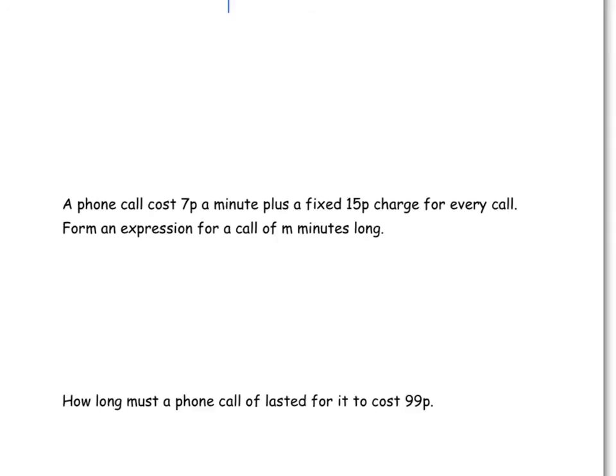So each minute costs 7p. One minute would cost 7p, two minutes 14p, three minutes 21p, four minutes 28p. But we don't know how many minutes it is, we're just told it's m minutes. So we've got our 7p per minute, and we don't know how many minutes, so we're going to times that by m. But we're also told you've got an extra charge of 15p, which is a fixed charge, which means it's going to be added on. So we've got our 7m, and we've got to add on an extra 15p. Now that is an expression for the cost of a call that lasts m minutes long.